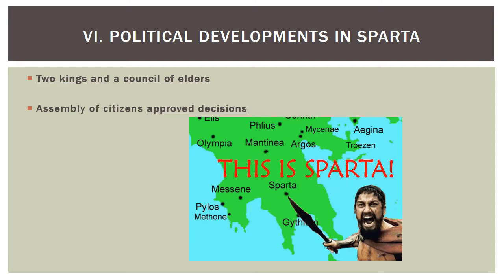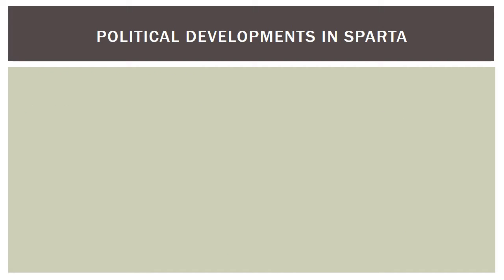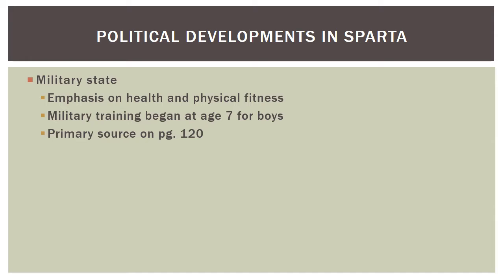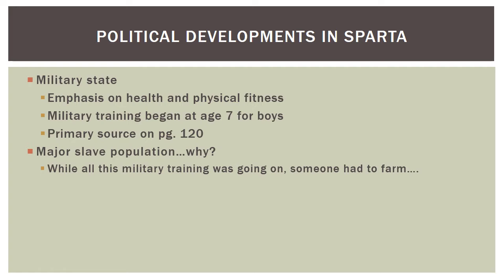There was also an assembly of citizens that approved decisions, so the council of elders was held in check and did not have absolute authority. Sparta was a military state with a huge emphasis on health and physical fitness. Children's education was entirely military training, tactics, and philosophies. They would be taken at age seven and sent into military training. Sparta also had a major slave population because while military training was ongoing and men were focused on battles and war, someone had to provide food and manage agriculture.